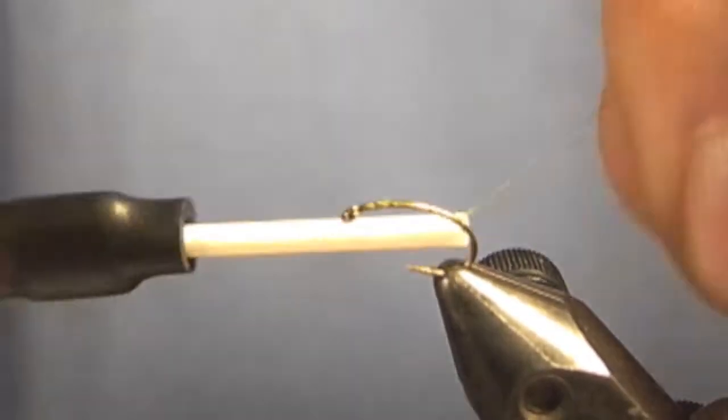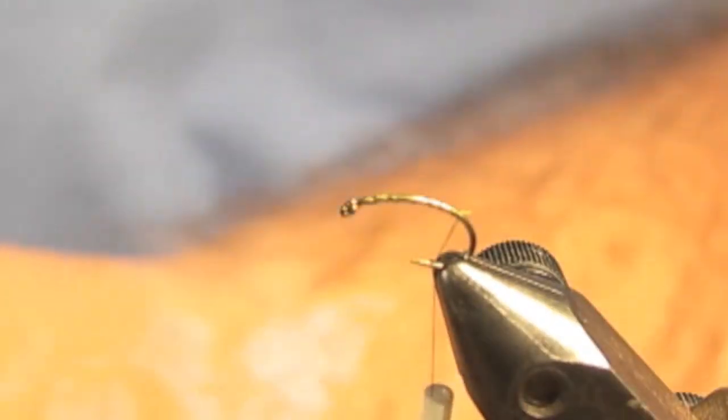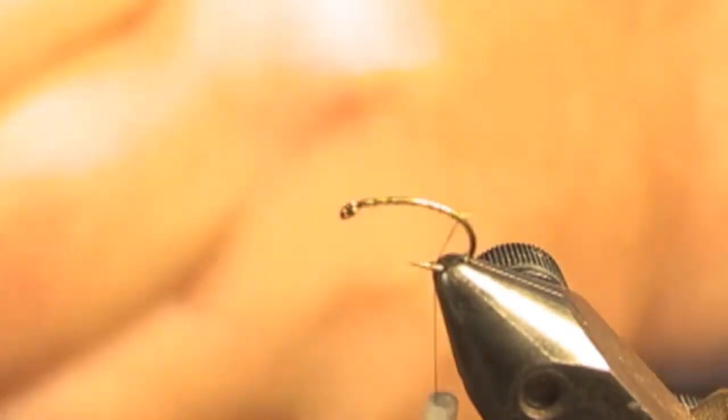Attach the thread and wind it to the back of the hook. This is Umqua green super fine dubbing.